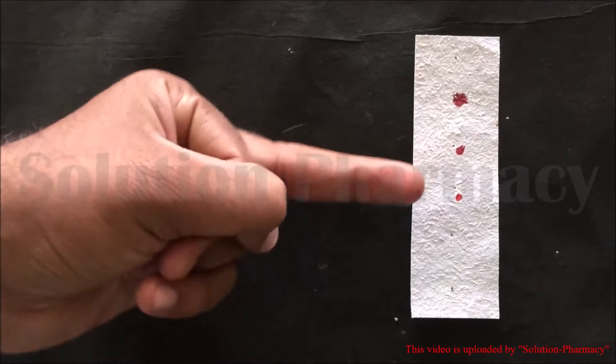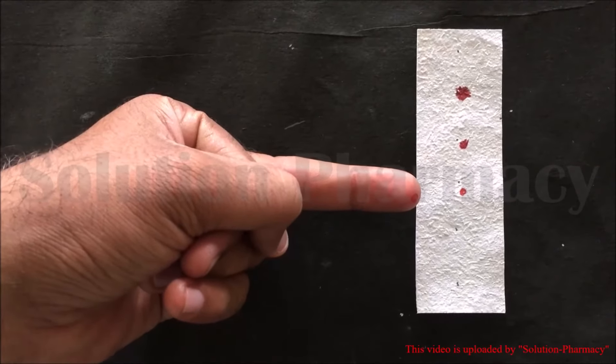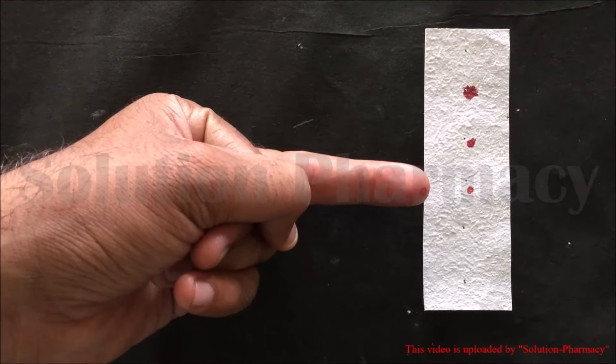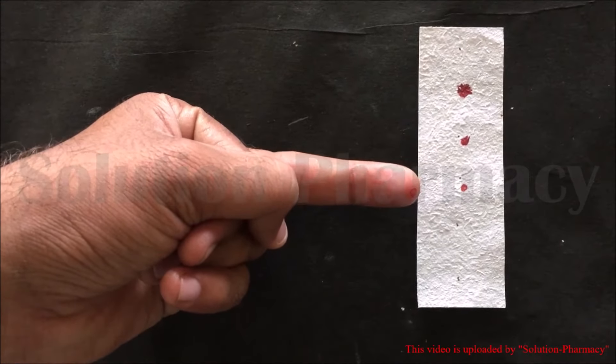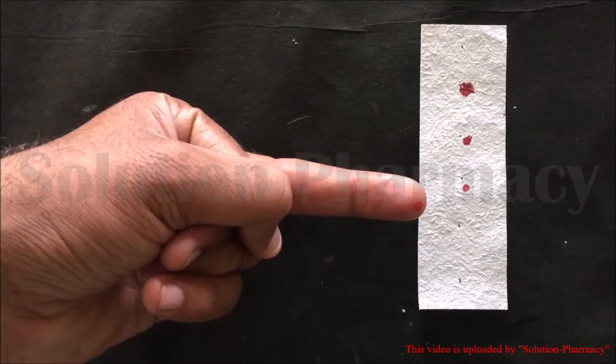After the next 30 seconds, apply the pricked side of the fingertip on the filter paper again. You can observe that blood stains the filter paper. This blood spot is lighter and smaller than the other two spots.